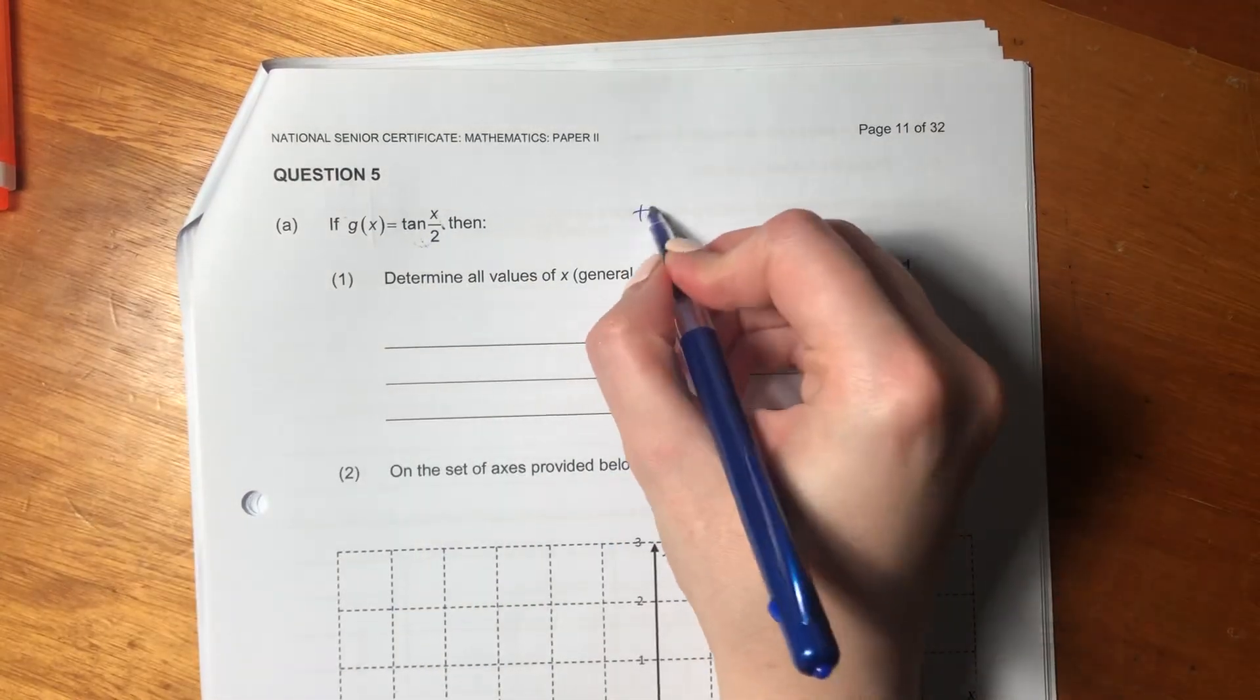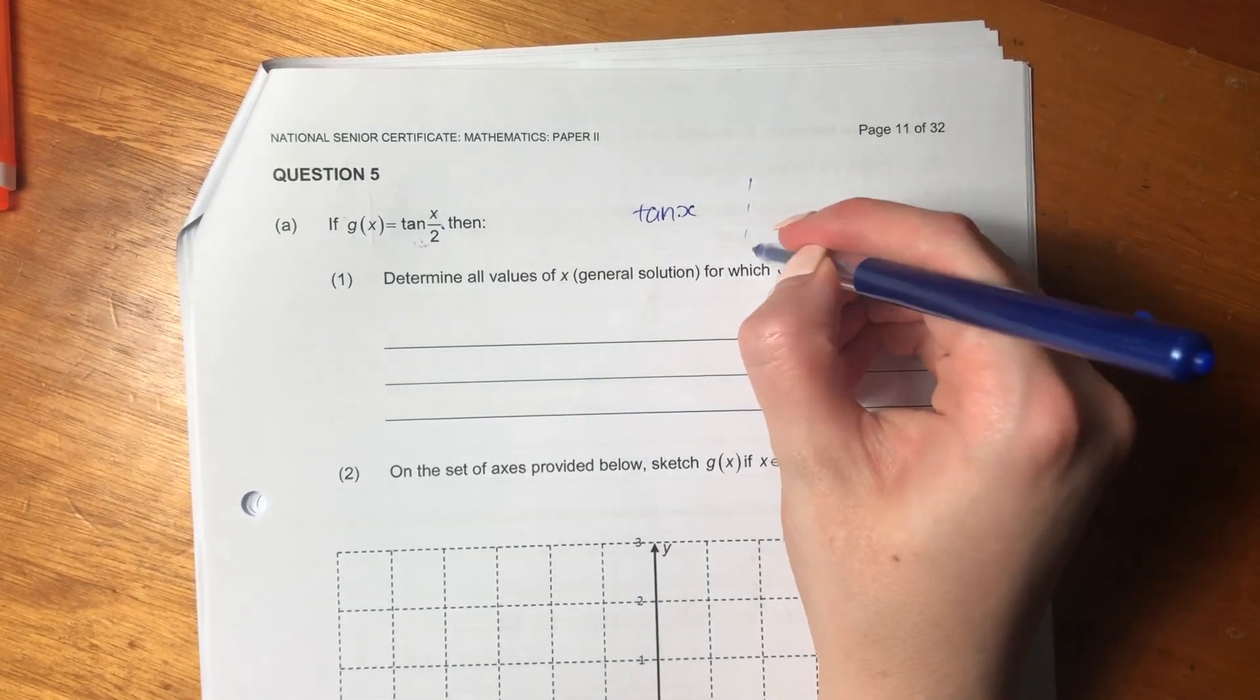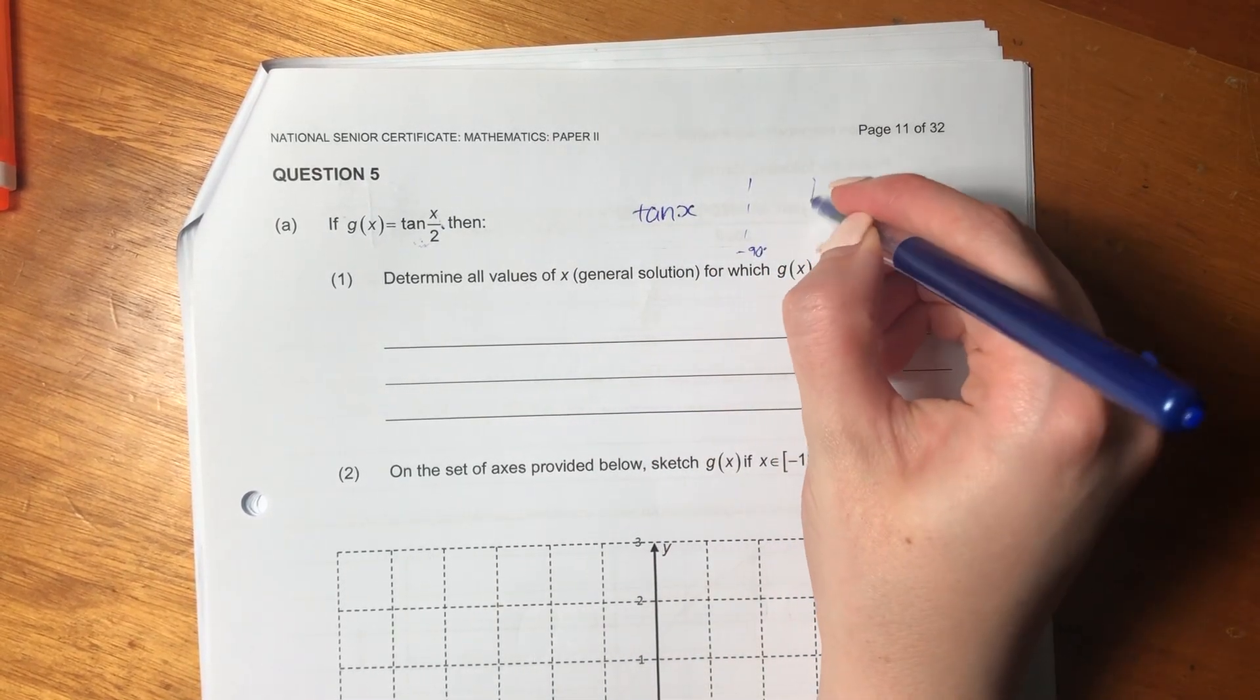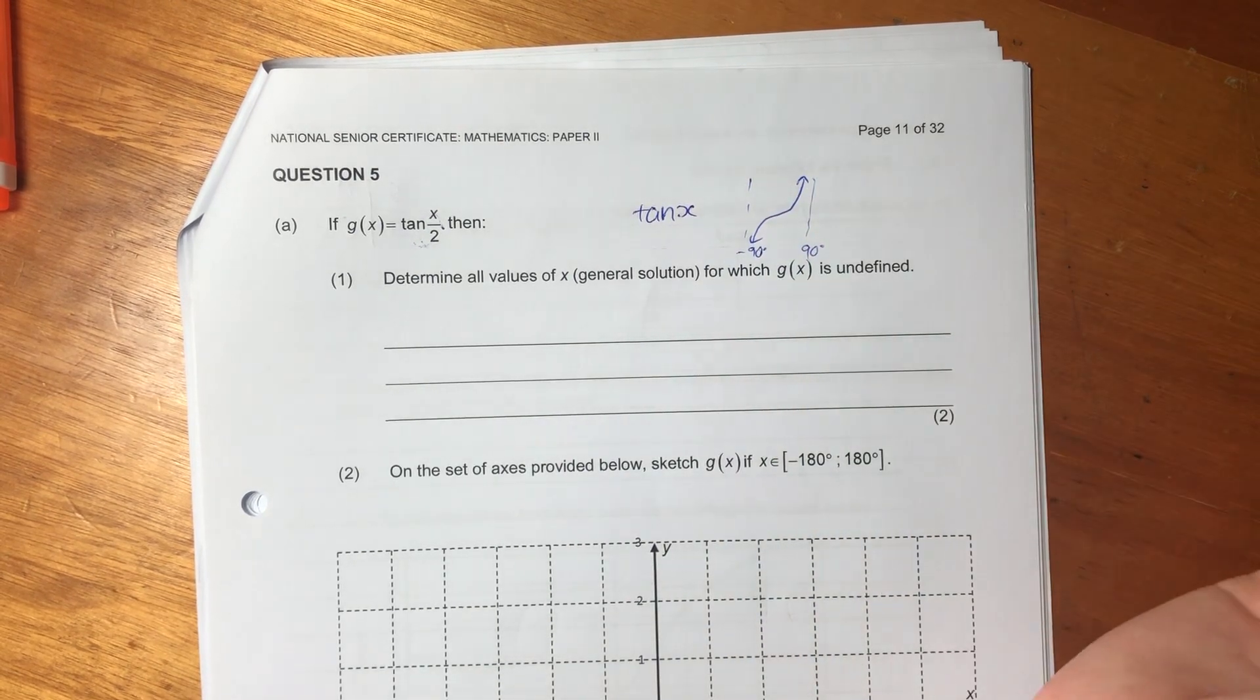Okay, so let's just talk about tan x. So tan x has asymptotes at negative 90 and 90, right? And it kind of looks like this.